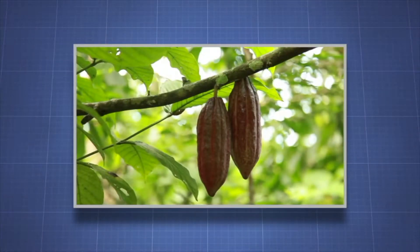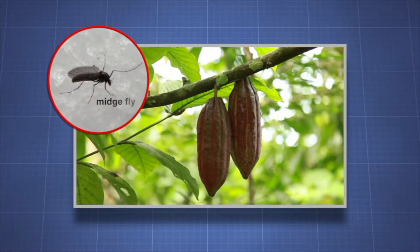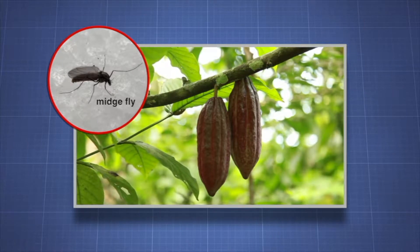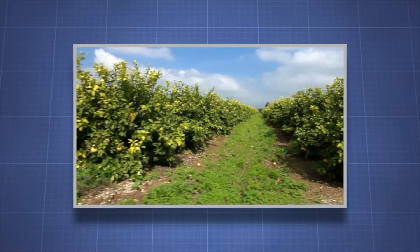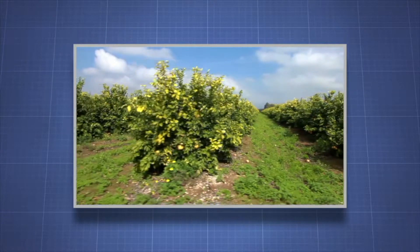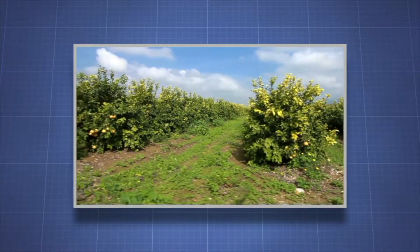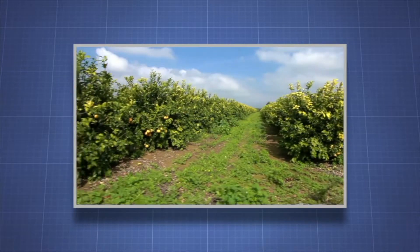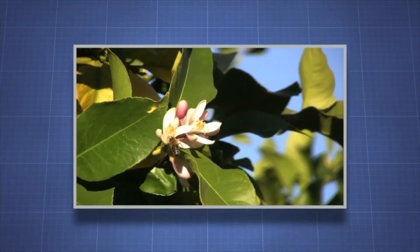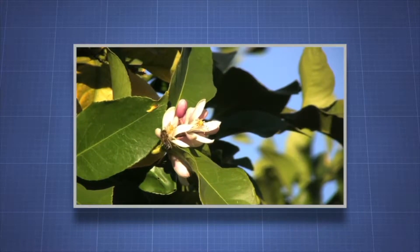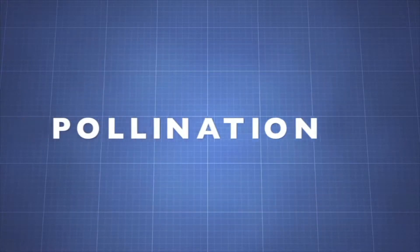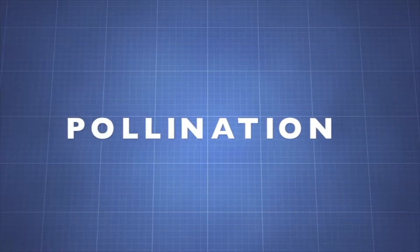Chocolate comes from the cocoa tree. Midges pollinate the cocoa flowers, so if you like chocolate you can thank these tiny flies. In fact, most of our fruit crops, grains and vegetables need to be pollinated. It's no exaggeration to say our lives depend on pollinators. Let's learn more about pollination.